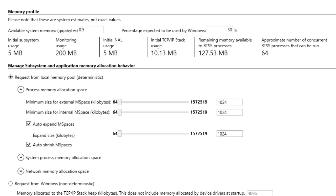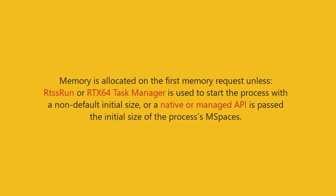Memory is allocated on the first memory request, unless RTSS Run or RTX64 Task Manager is used to start the process with an initial size other than the control panel default, or when a native or managed API is passed the initial size of the process's mspaces.